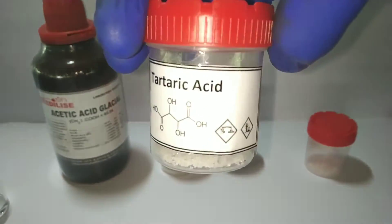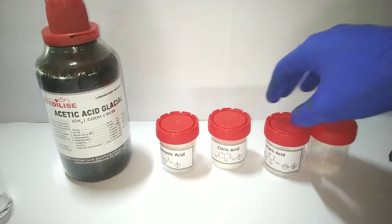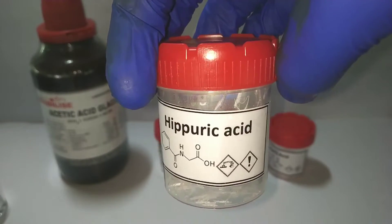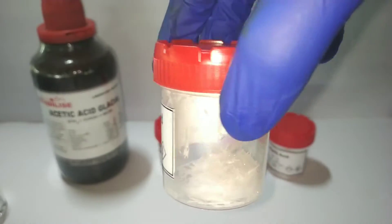This is tartaric acid, seen plenty in the fruit tamarind. And this is hippuric acid, which is normally excreted through urine when you have increased consumption of phenolic products like fruit juices and wine.